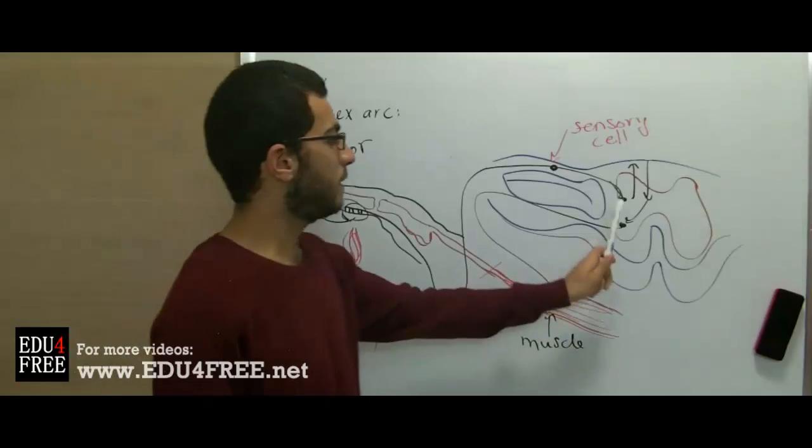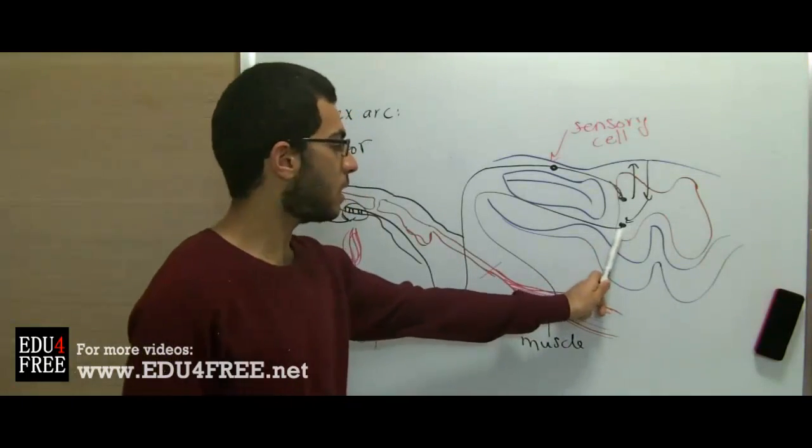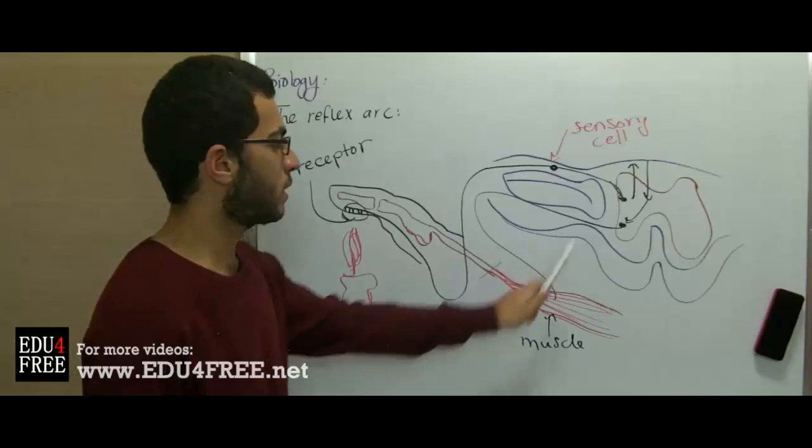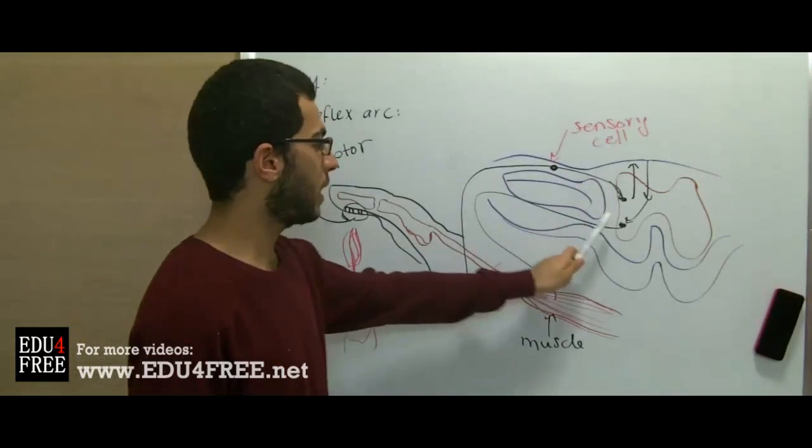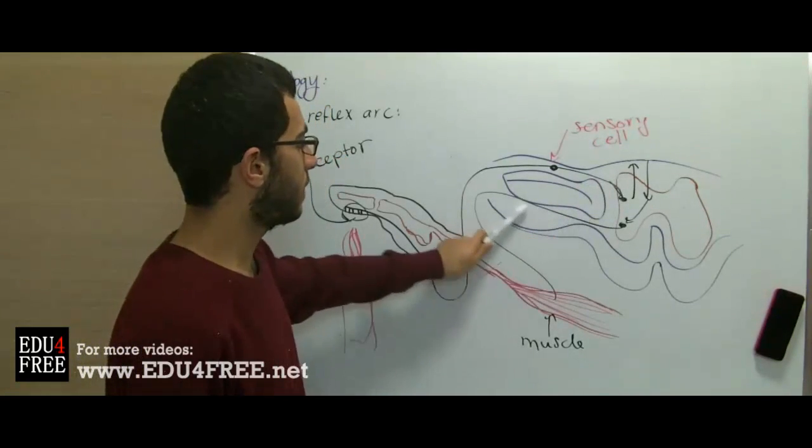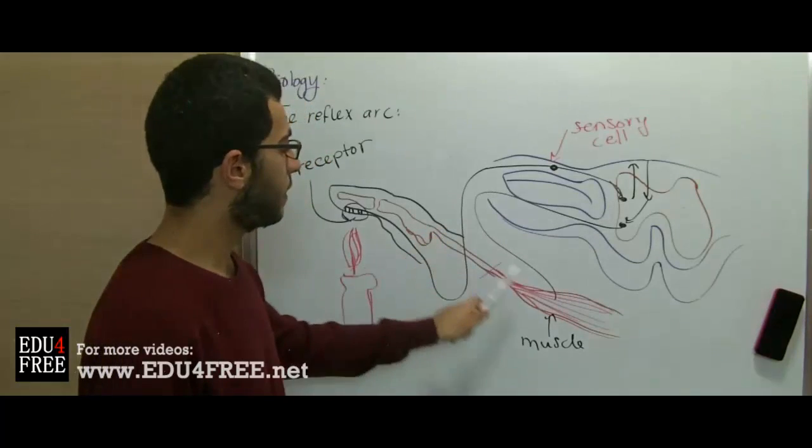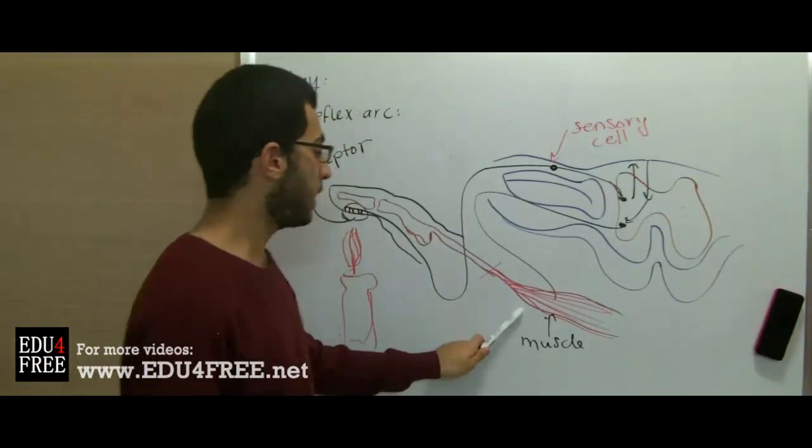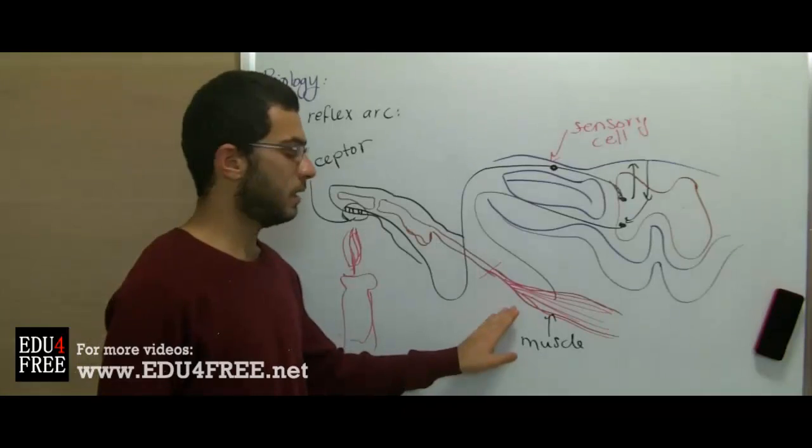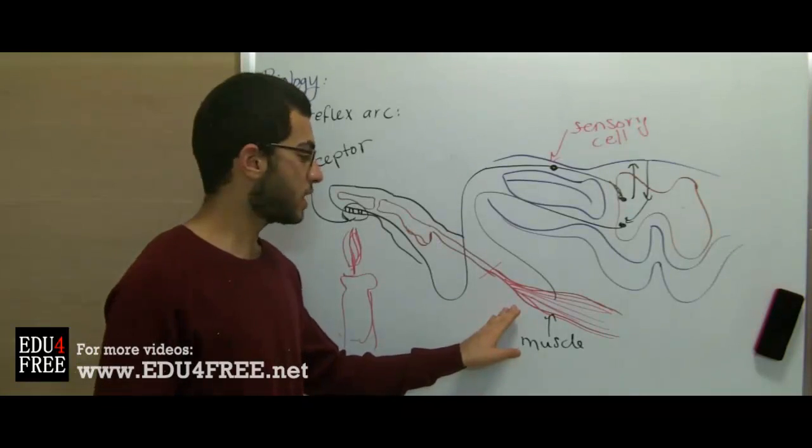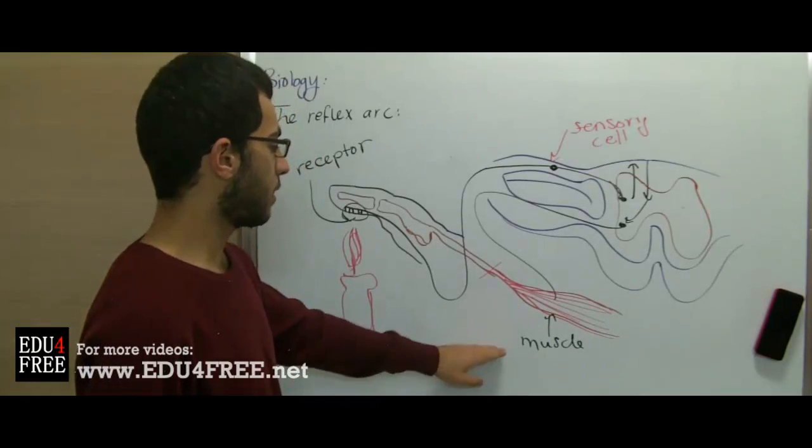Then we have a motor neuron, which transmits the proper response from the brain through the gray matter, and then goes through the ventral root, and then through the final element, which is the corresponding organ, which is here, the muscle.